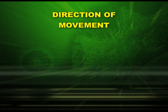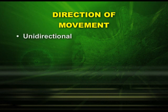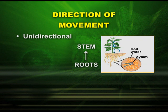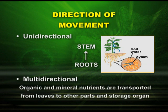In the direction of movement, we have two types: unidirectional, that is from roots to stem, and second, multidirectional, in which the organic and mineral nutrients are transported from leaves to other parts and storage organs.